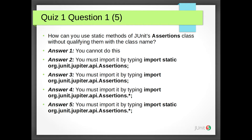Answer 1: You cannot do this. Answer 2: You must import it by typing import static org.junit.jupiter.api.Assertions. Answer 3: You must import it by typing import org.junit.jupiter.api.Assertions. Answer 4: You must import it by typing import org.junit.jupiter.api.assertions.star.